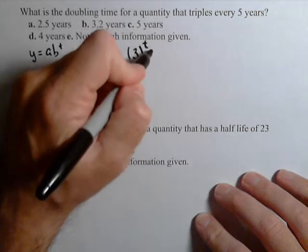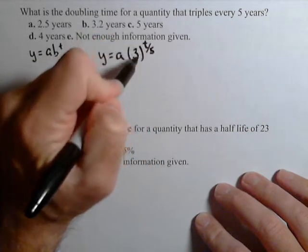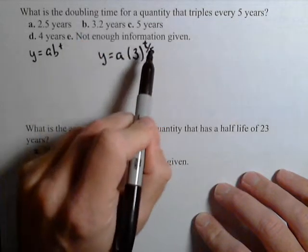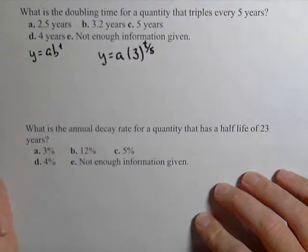But I want it to triple every five years. So what I do is I just divide my t by five, because what that does is every time t's a multiple of five, I multiply it by another three. And I've already got my model.